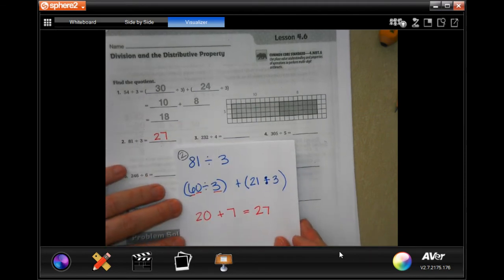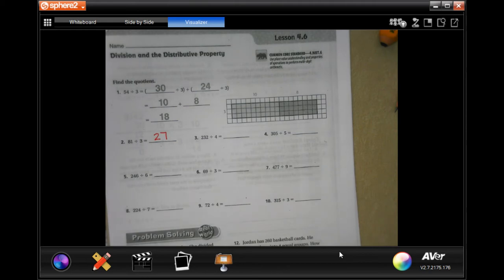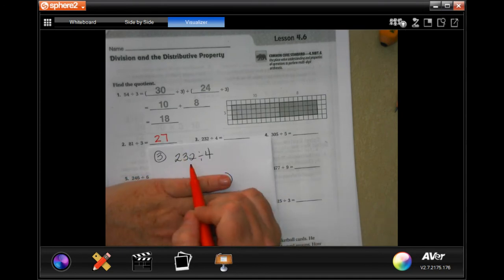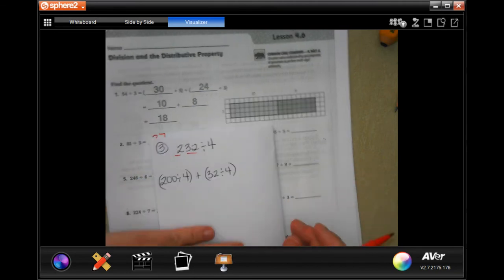That's what they want you to do. Don't worry, we're going to do numbers three and four too. So number three, it says 232 divided by four. Well, I know that four goes into 200 and I know it goes into 32. So that's how I broke it up.